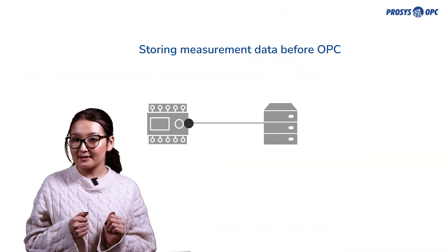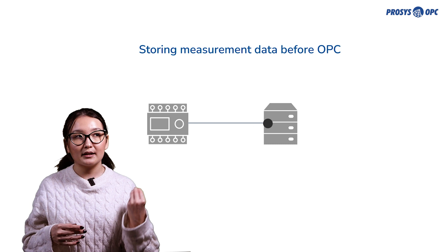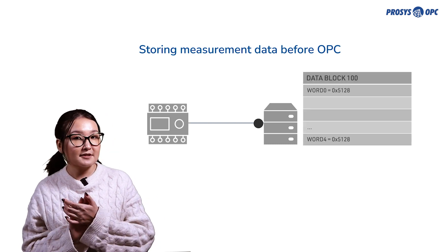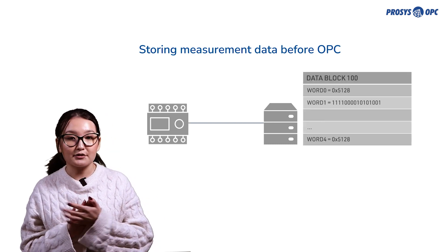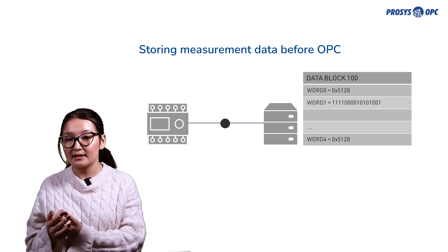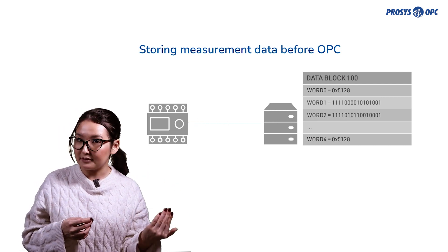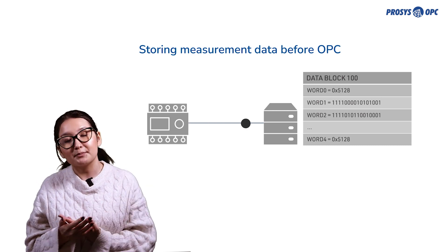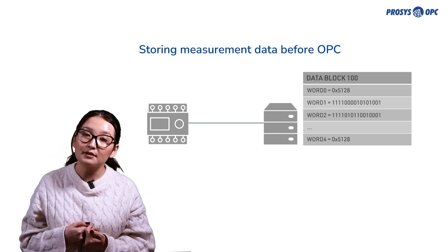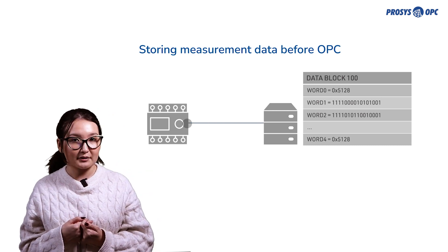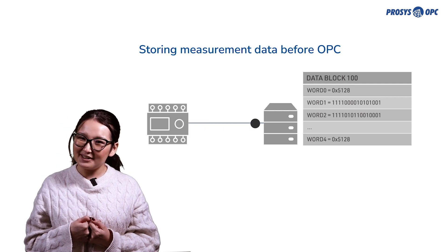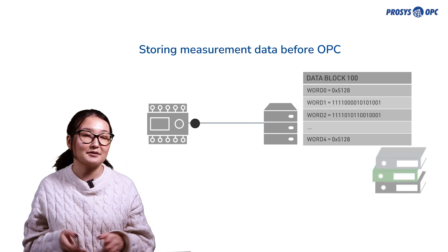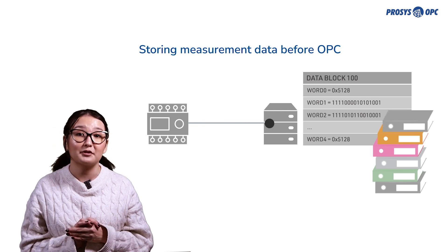In the past, data exchange was mainly done by using physical addresses as the keys. For example, specific measurement values might have been stored in the first 6 bits of the double word in address 100. Just like these days, it was up to the PLC programmer to decide how to store values and where to store them. In the end, however, the work required a lot of documentation, including memory location and data type for each measure.